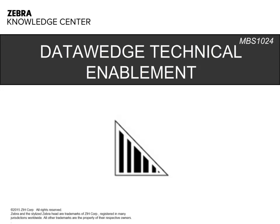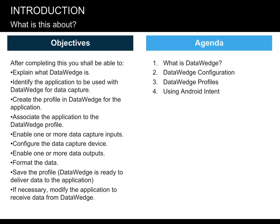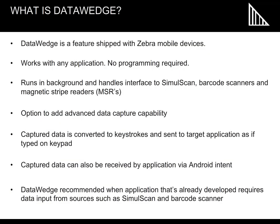Welcome to the Data Wedge Technical Enablement course. Listed here are the learning objectives and the topics we will cover in this course. Data Wedge is a feature shipped with Zebra mobile devices. It works with any application and no programming is required. Data Wedge runs in the background and handles the interface to SimulScan, barcode scanners, and magnetic stripe readers, and there is an option to add advanced data capture capability.